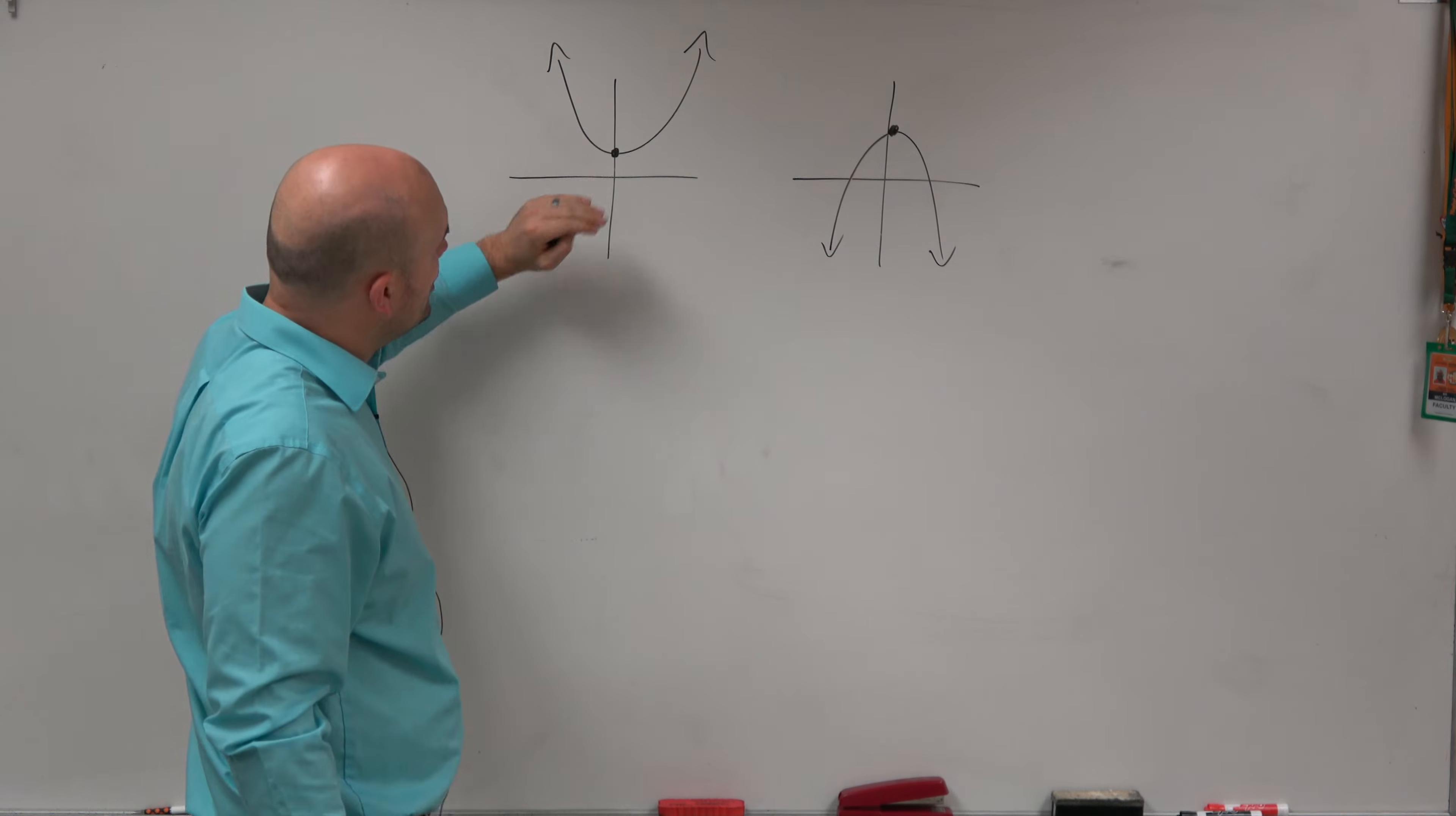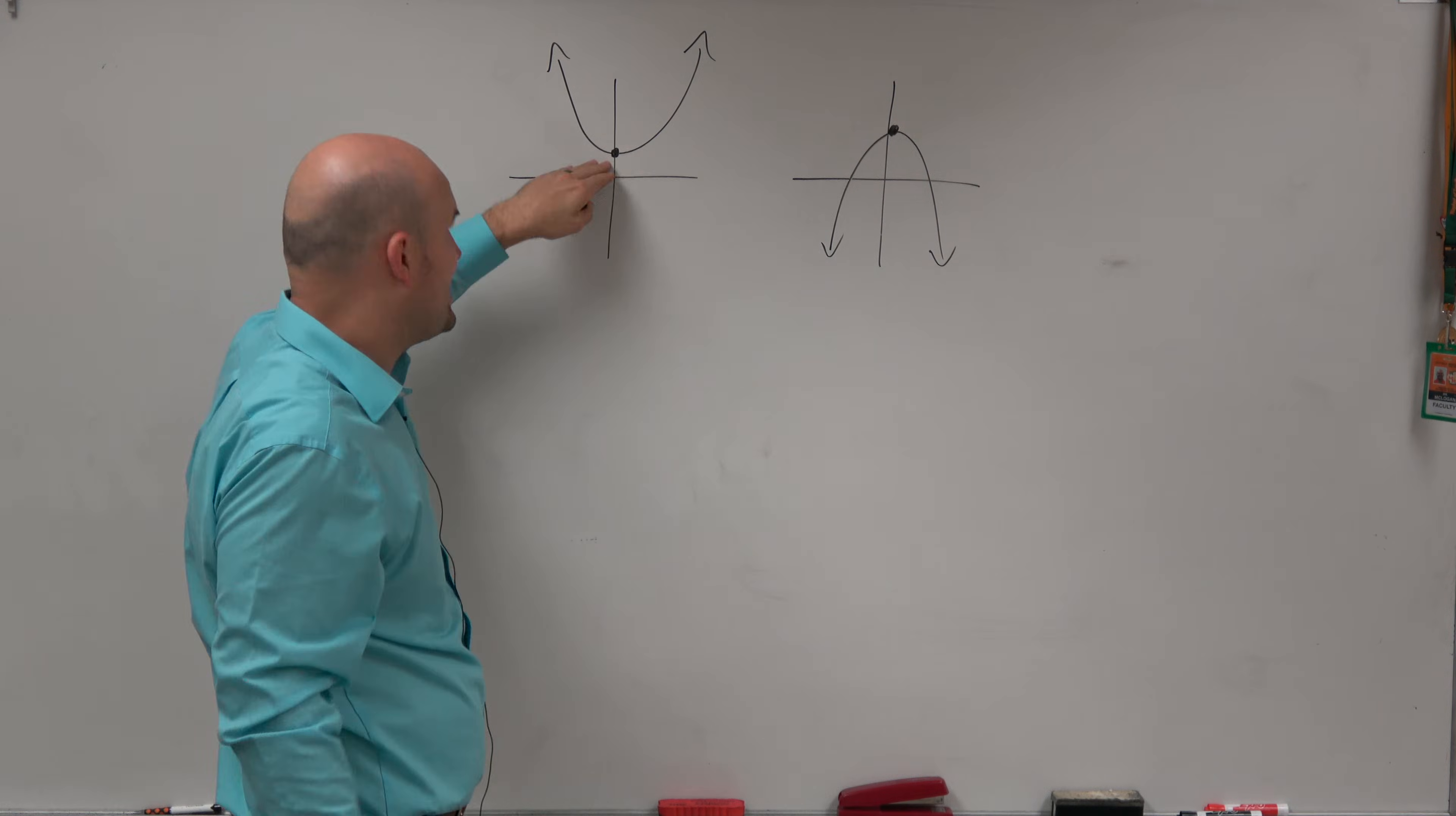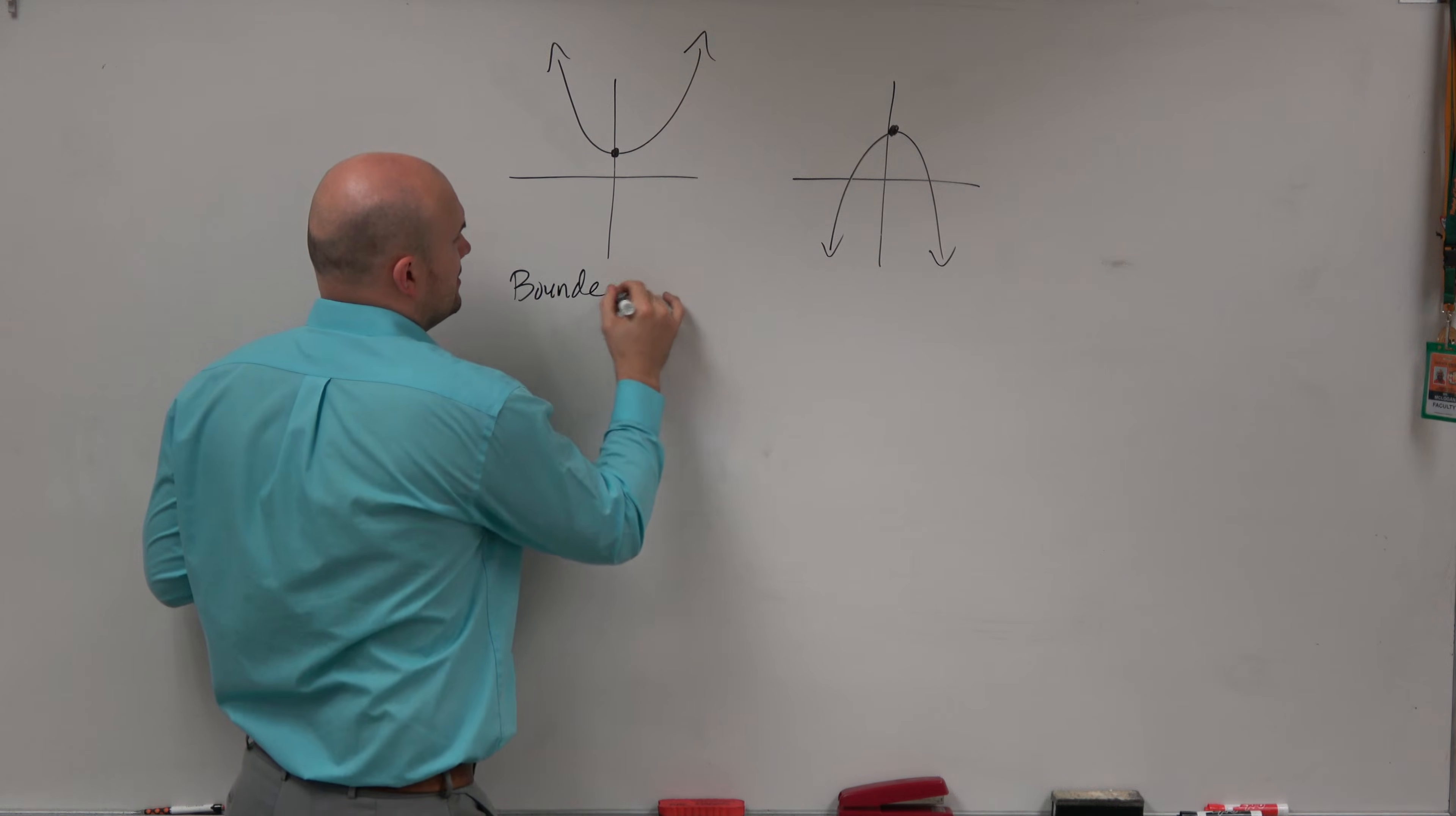So since it never goes below that value, you can see that this is bounded. There's a boundary that you cannot go below, which is the absolute minimum. So we call this graph bounded below.